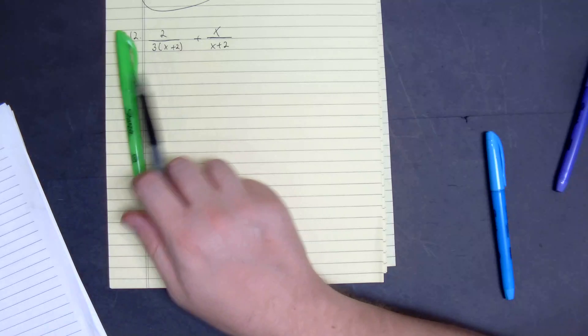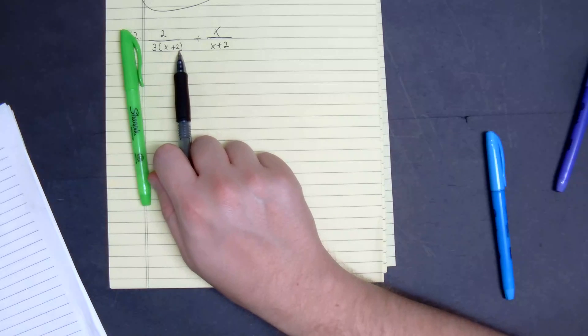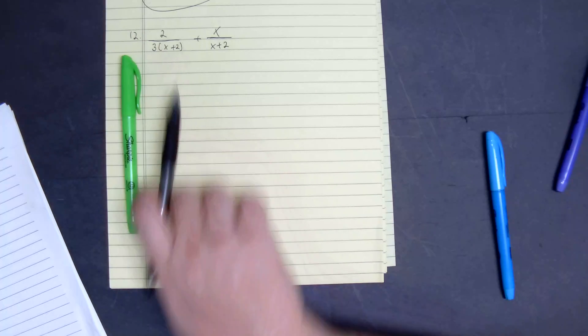What's kind of cool about this problem is they left out 3x plus 6 if you were to distribute, so I'm going to keep it this way.